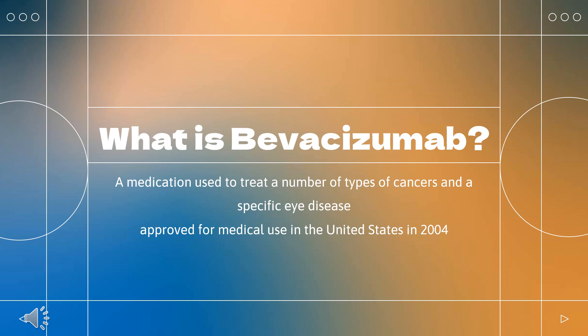Bevacizumab, sold under the brand name Avastin among others, is a medication used to treat a number of types of cancers and a specific eye disease. For cancer, it is given by slow injection into a vein and used for colon cancer, lung cancer, glioblastoma, and renal cell carcinoma. Bevacizumab was approved for medical use in the United States in 2004, and is on the World Health Organization's list of essential medicines, listed for its use in treating eye disease.